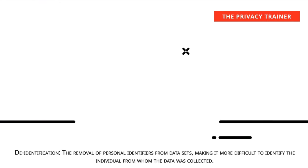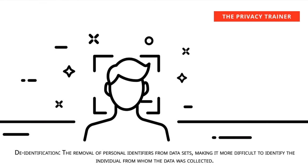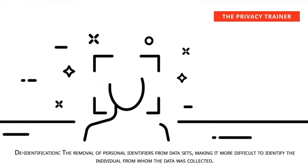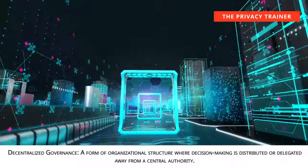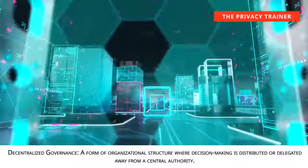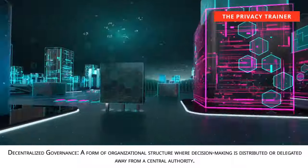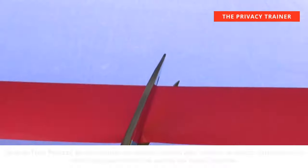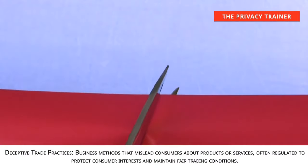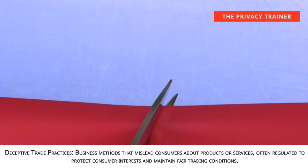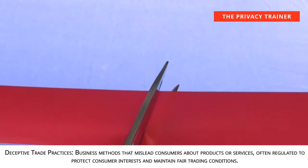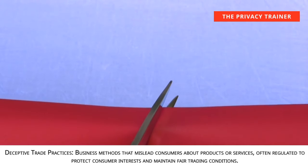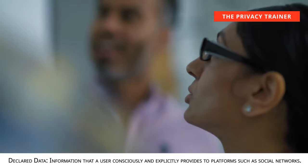De-identification. The removal of personal identifiers from data sets, making it more difficult to identify the individual from whom the data was collected. Decentralized governance. A form of organizational structure where decision-making is distributed or delegated away from a central authority. Deceptive trade practices. Business methods that mislead consumers about products or services, often regulated to protect consumer interests and maintain fair trading conditions. Declared data. Information that a user consciously and explicitly provides to platforms such as social networks.